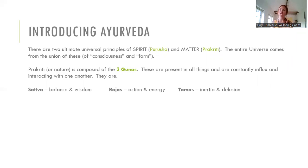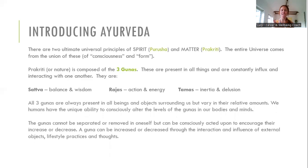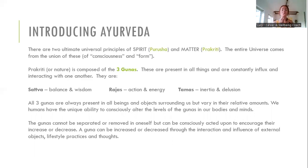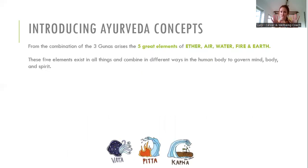The Gunas are present in everything but can be in different amounts. What makes us unique as humans is that we have the ability to consciously alter these Gunas in our bodies and minds — through things like our lifestyle, what we eat, our thoughts, and so on. So out of these three Gunas, when they're combined, come the five great elements: ether, air, water, fire, and earth.